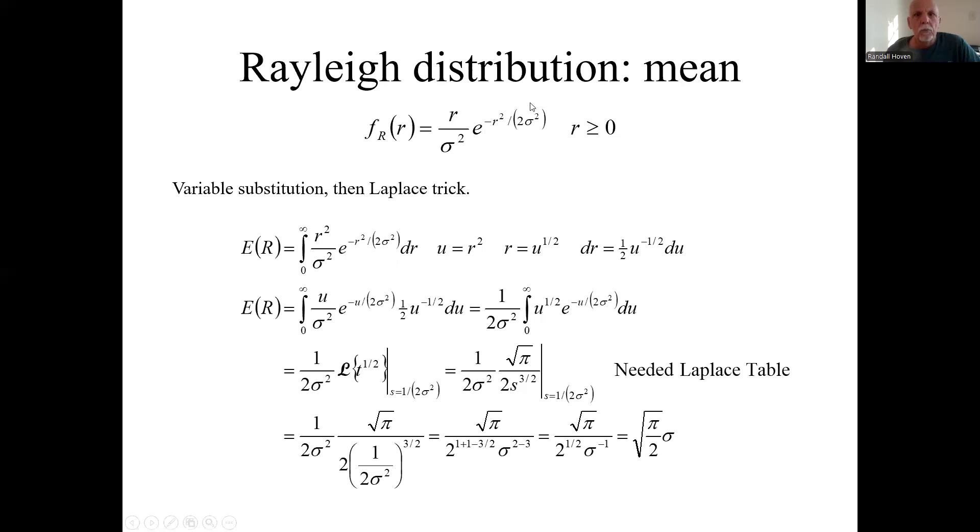So find the mean. Well, that means multiply this guy. It's a function of r. R is the random variable. So we need to multiply by another little r times this. So this is the integral we need to take.